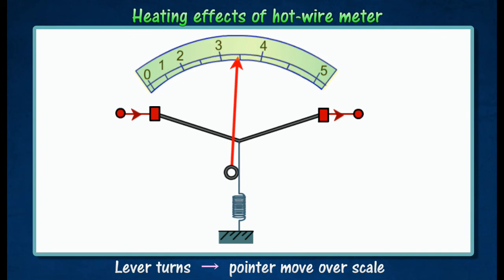The scale of hot wire meter is non-linear because the expansion of the platinum wire is not directly proportional to the current flowing through it.